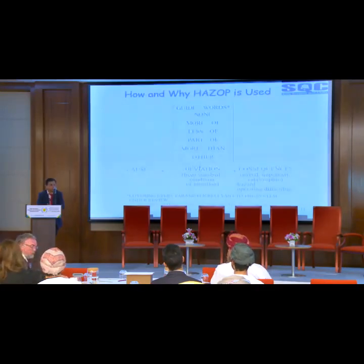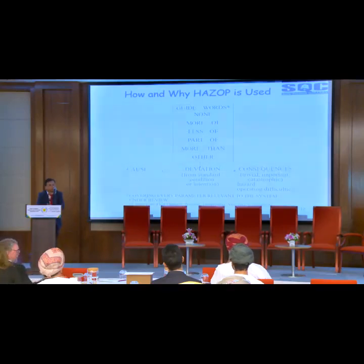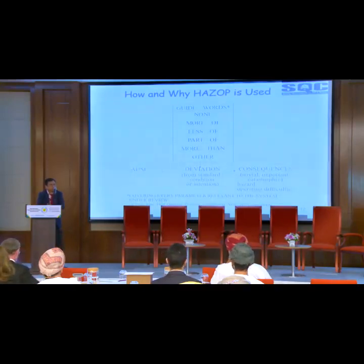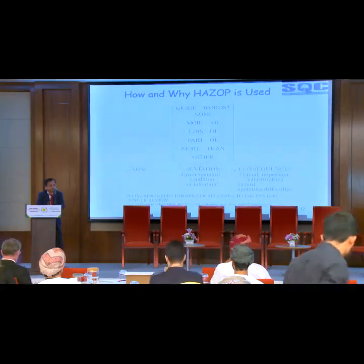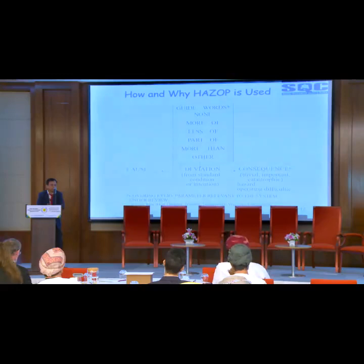The guide words cover every parameter relevant to the system under study, like flow rate, flow diagram, and different parameters. The guide words generally used are: none, more of, less of, part of, more than others. While using these guide words, you have to identify the deviation, the causes and consequences, and then come out with the action.